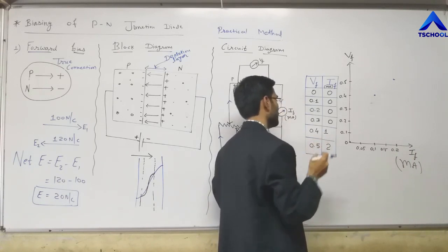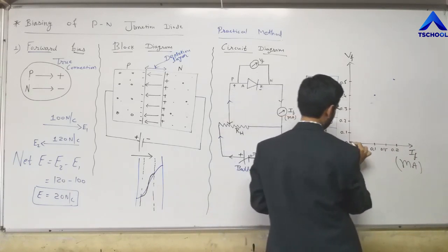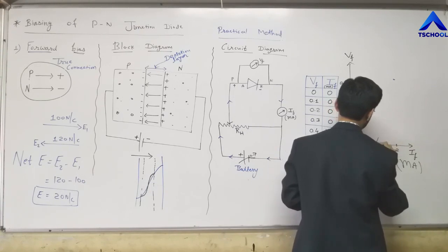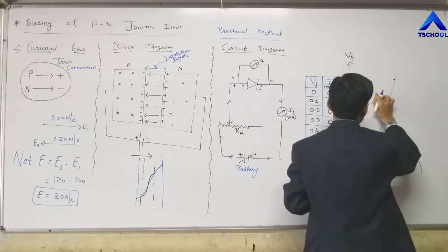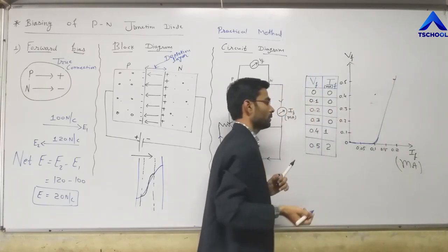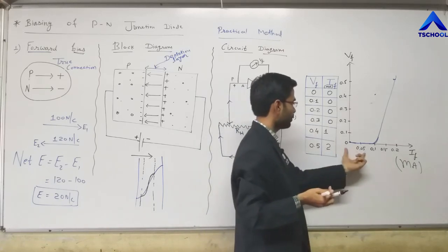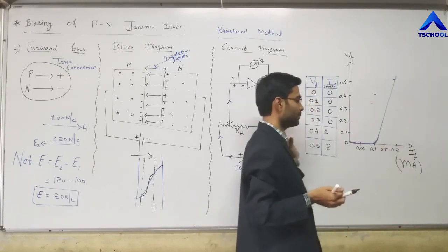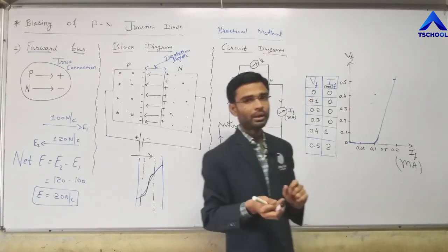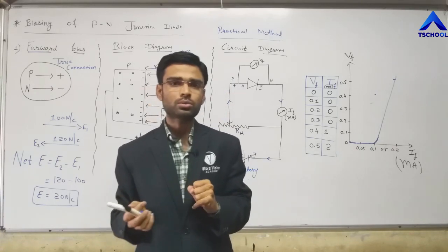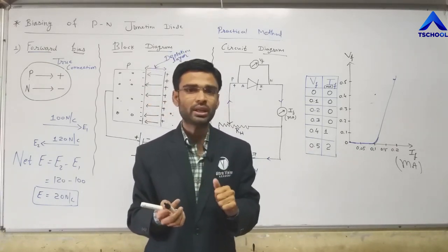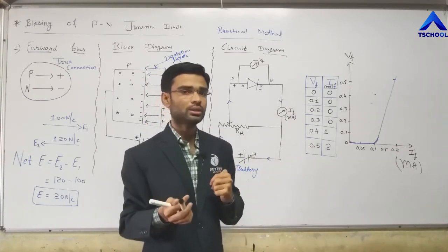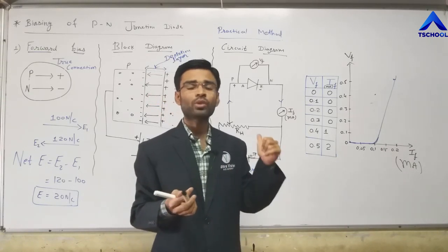If we plot these values in the graph, it looks like a forward characteristics curve. The graph of forward biasing when we connect the battery in true connection is called the forward characteristics of the PN Junction Diode. In examinations, questions may ask to explain the forward characteristics of the PN Junction Diode — that is nothing but forward biasing.